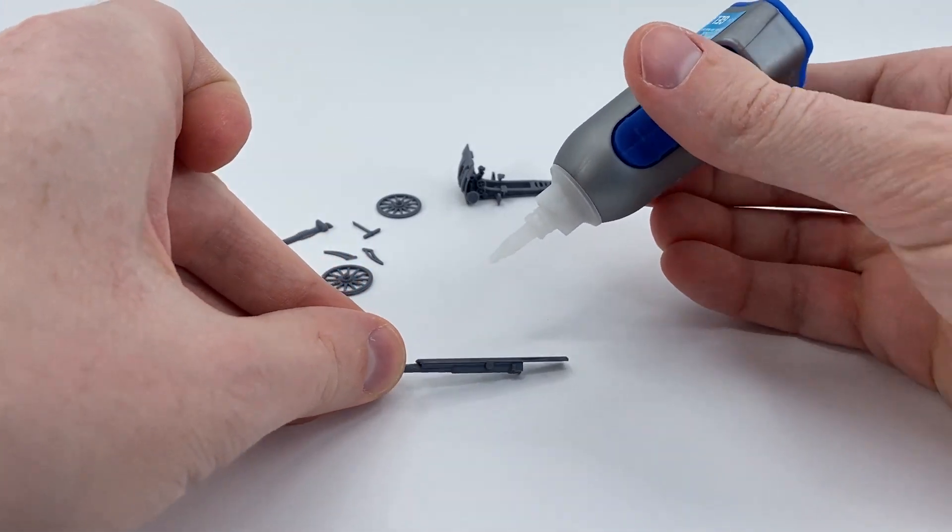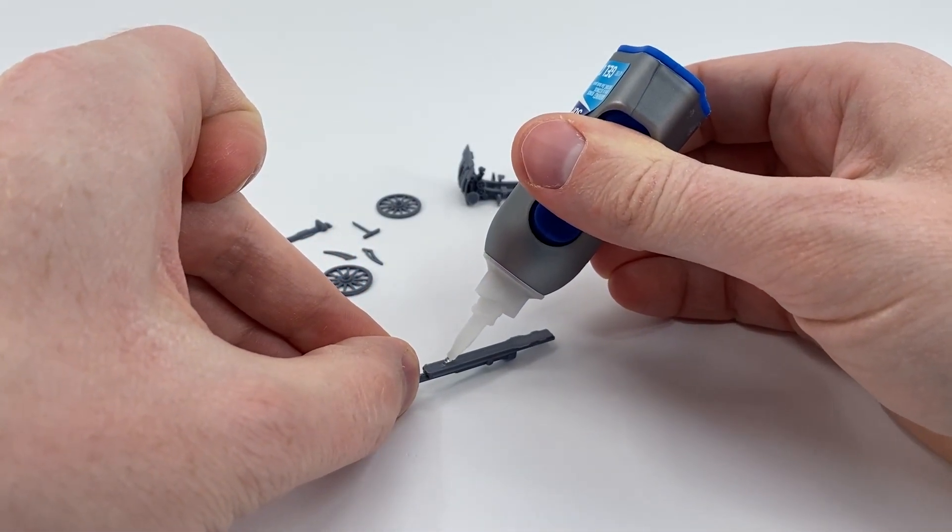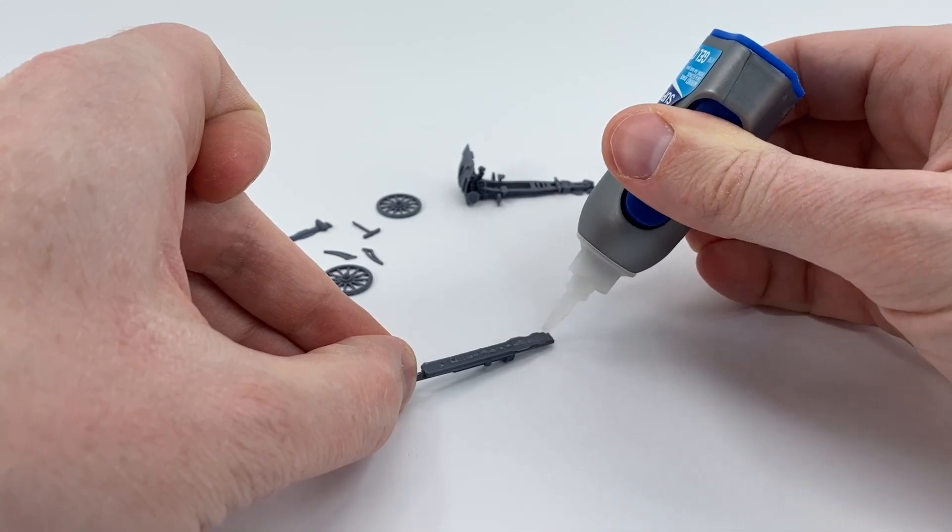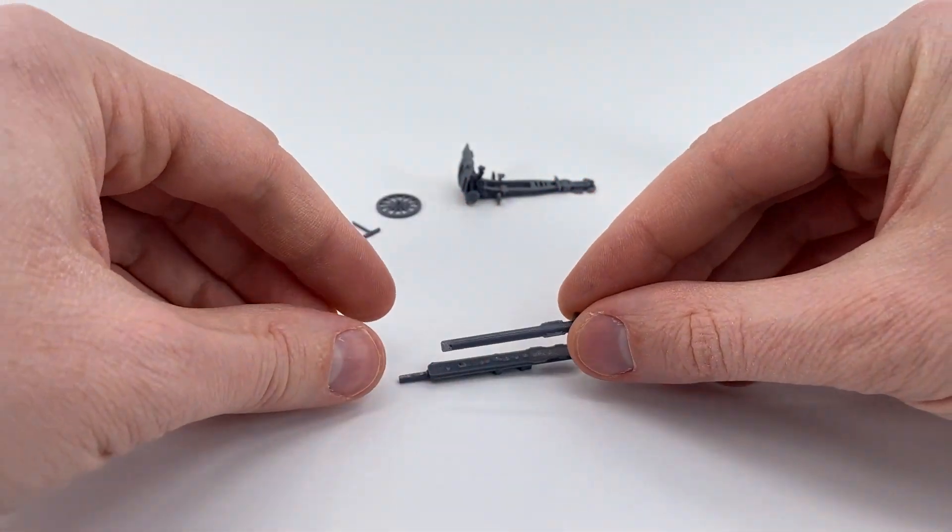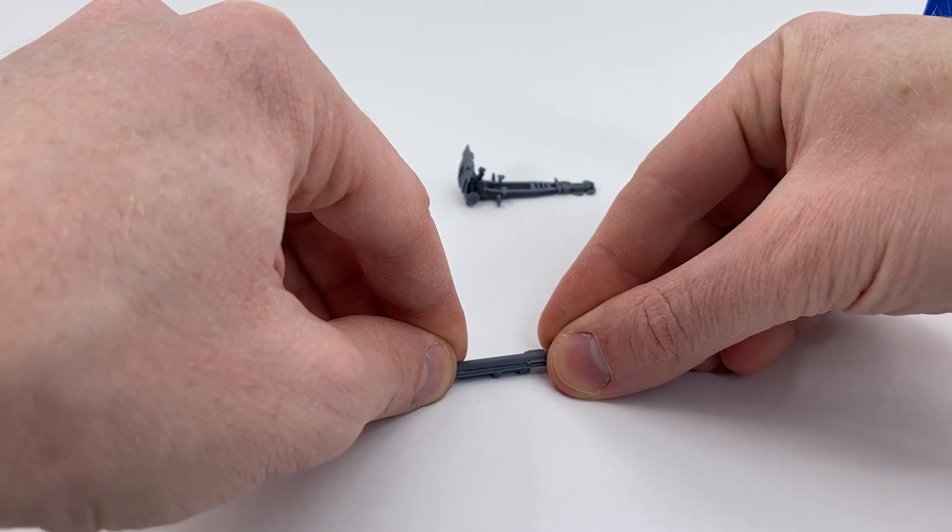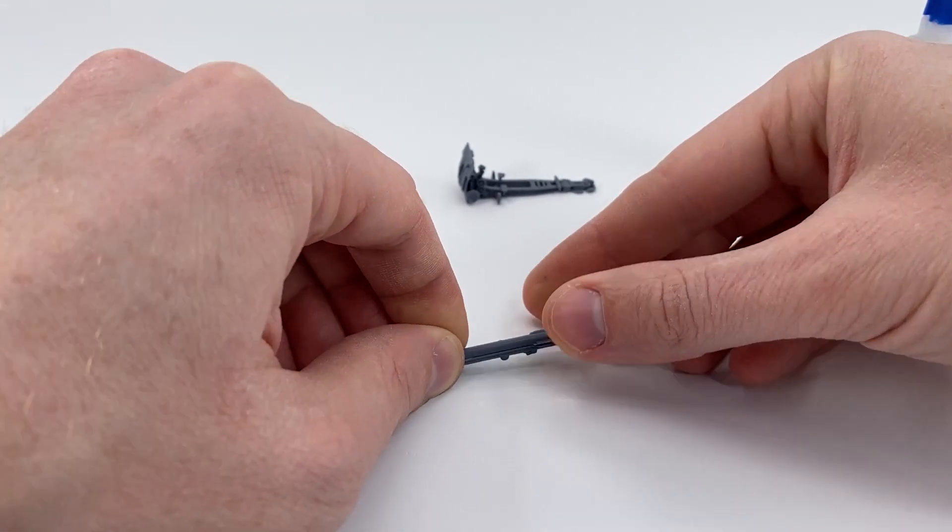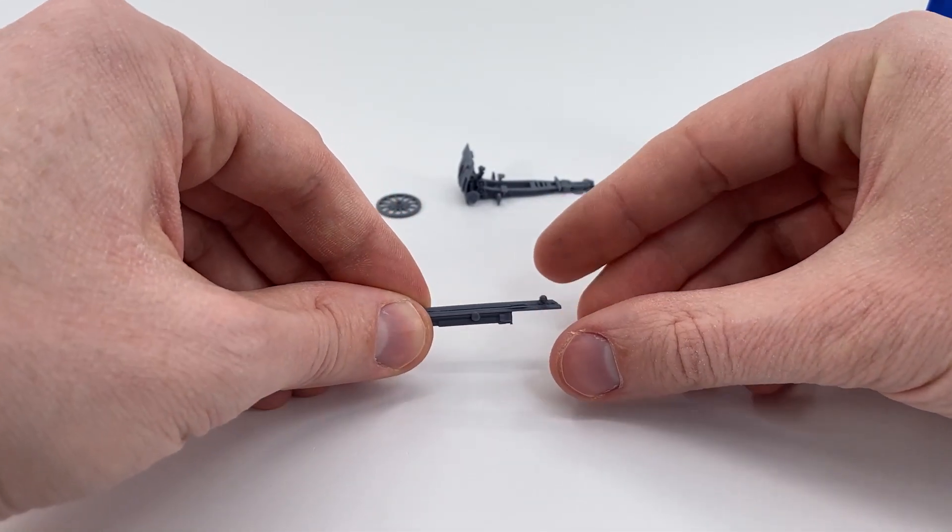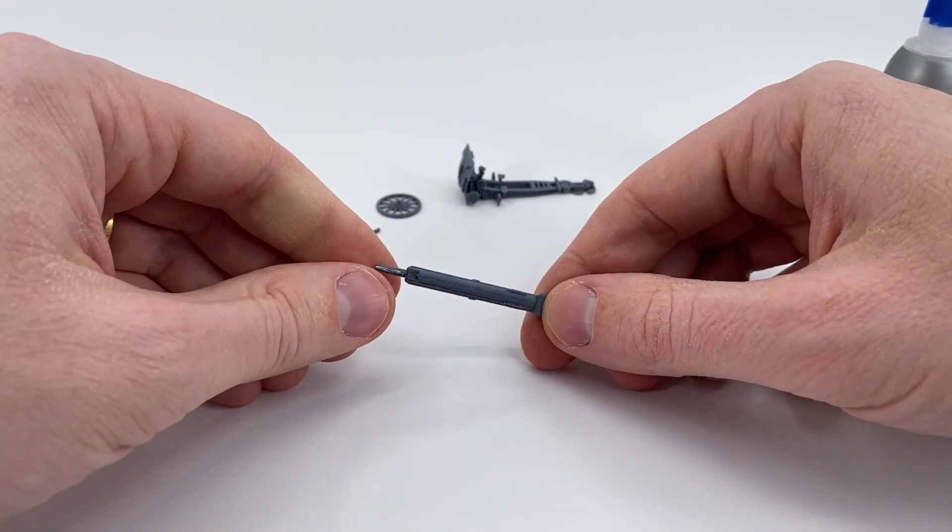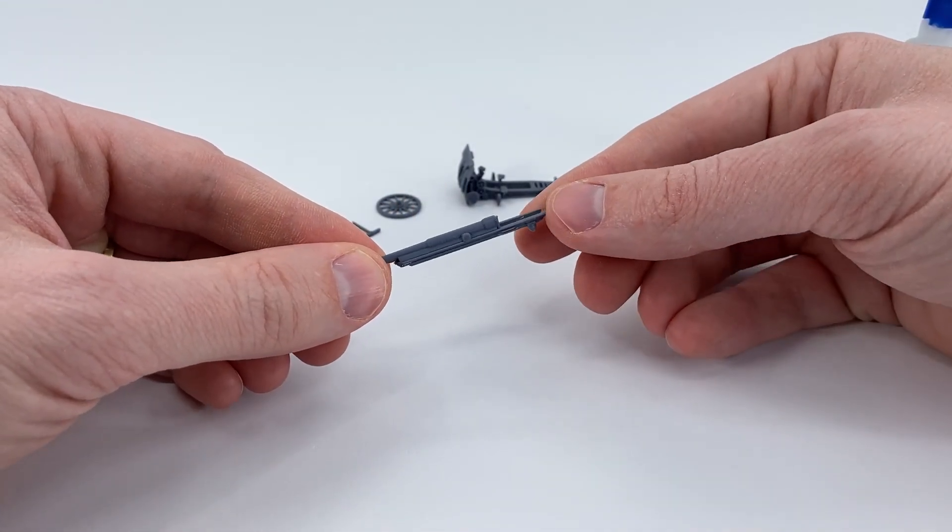So now let's start the gluing process. Just take some of your glue and then glue on the under part of this gun here. You see how that worked. That's working well.